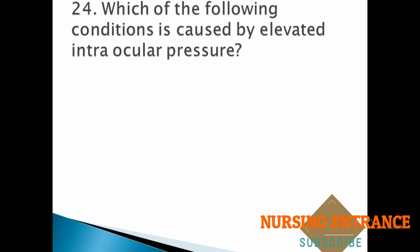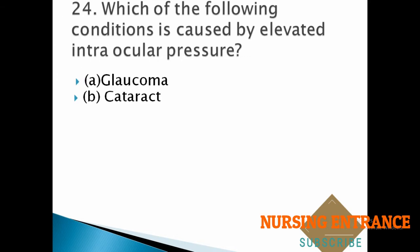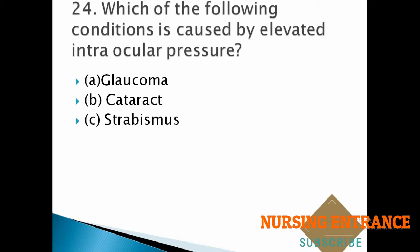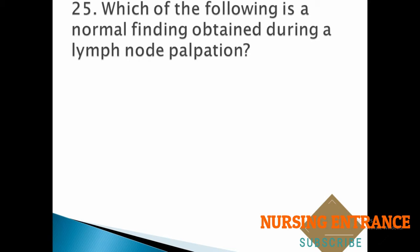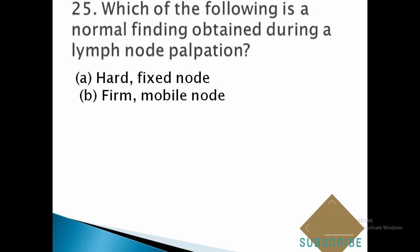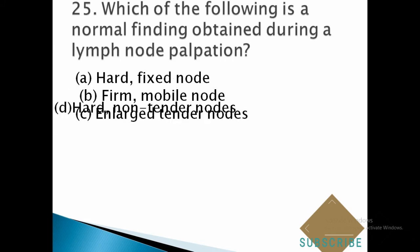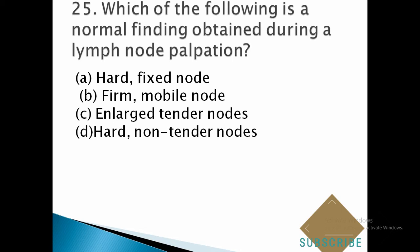Question number twenty-four: which of the following conditions is caused by elevated intraocular pressure? Options: A. glaucoma, B. cataract, C. strabismus, D. myopia. The correct answer is A, glaucoma. Question number twenty-five: which of the following is a normal finding obtained during lymph node palpation? A. hard fixed node, B. freely mobile node, C. enlarged tender nodes, D. hard non-tender nodes. The correct answer is B, freely mobile node.